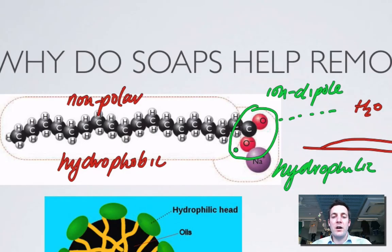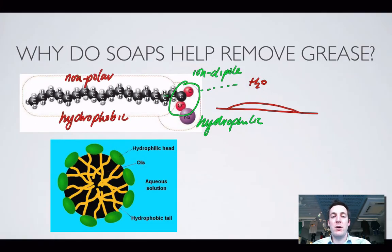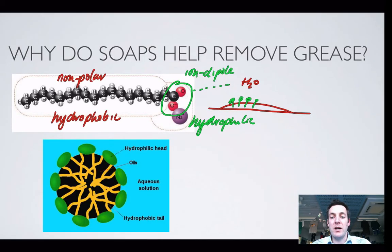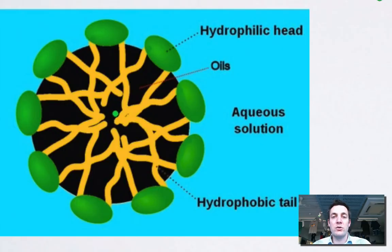Because the soap molecule has a hydrophilic, water-soluble end and a hydrophobic, fat-soluble end, it can minimise unfavourable interactions with water by burying the fat-soluble tail in the grease. The tails get buried in the grease, while the ionic hydrophilic heads stick out because they like dissolving in water. This maximises contact between the polar ends and water, and minimises contact between non-polar parts and water, forming structures called micelles.